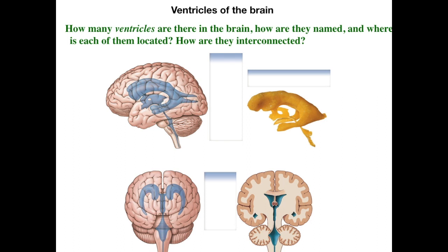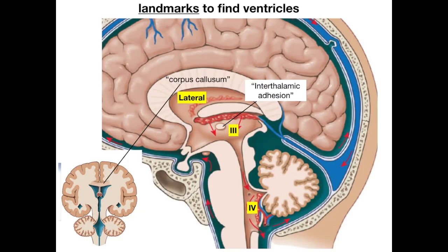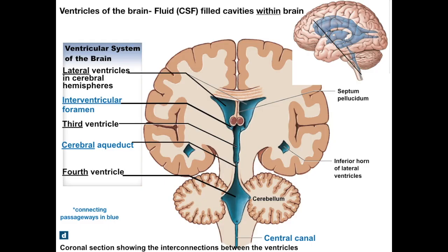The adult ventricular system has a very complicated shape and looks radically different depending on what view or section you're looking at. You'll also want to look at those ventricles in relation to other brain structures to find the landmarks associated with a given ventricle. There are four ventricles. The first two would be one and two, but nobody could decide which is number one and which is number two, so they're simply called the left and right lateral ventricles.